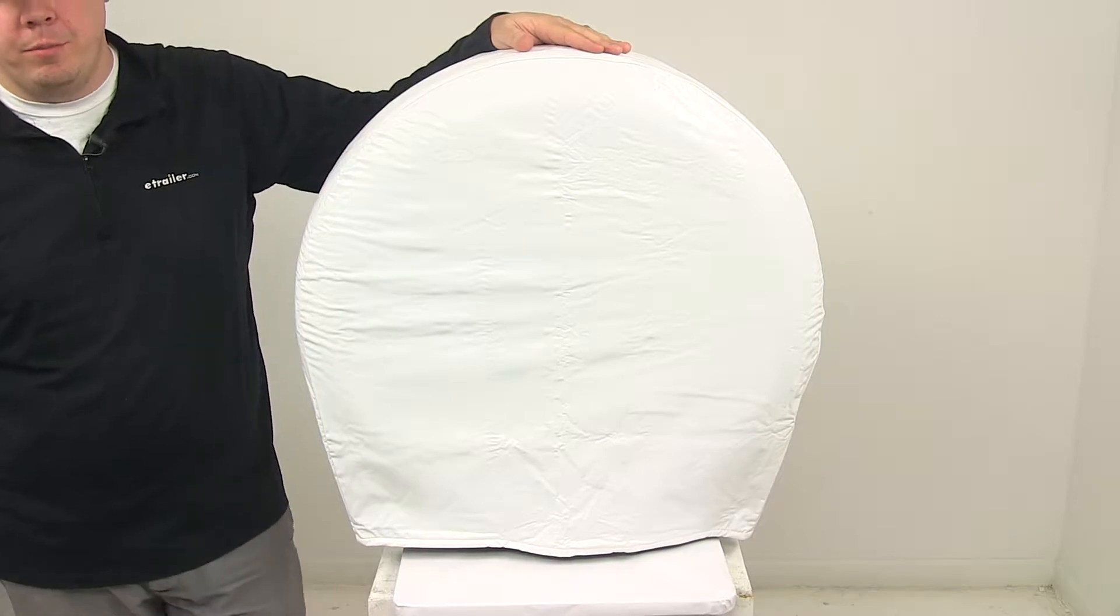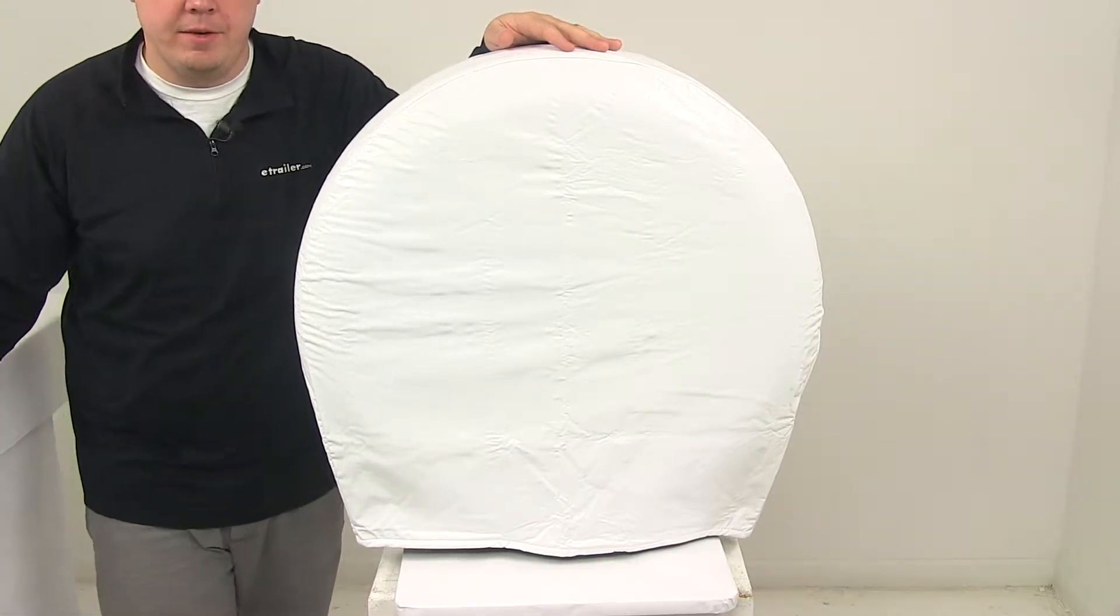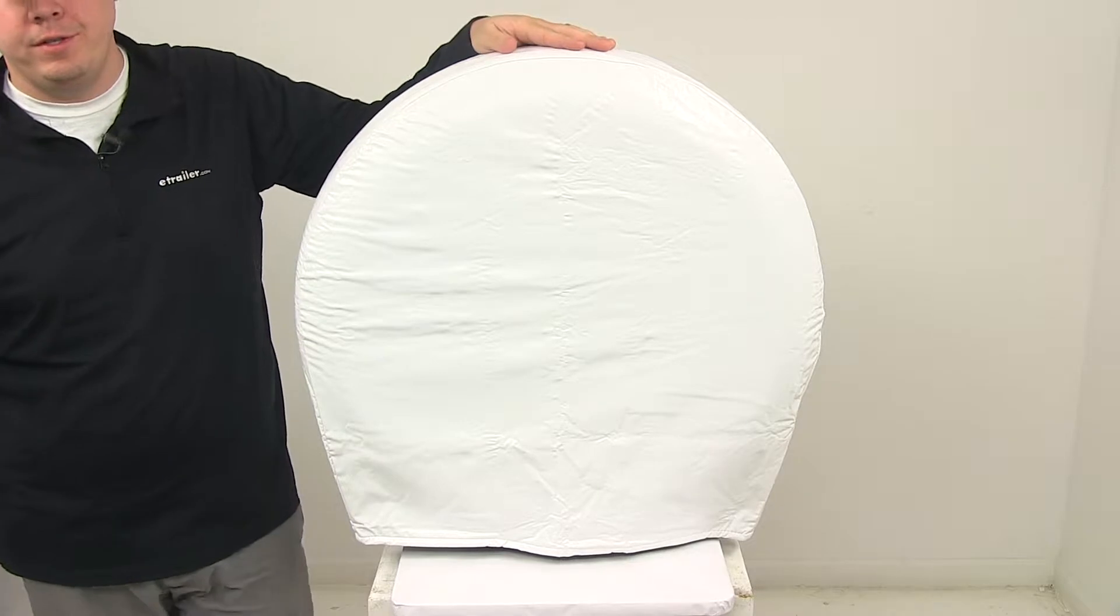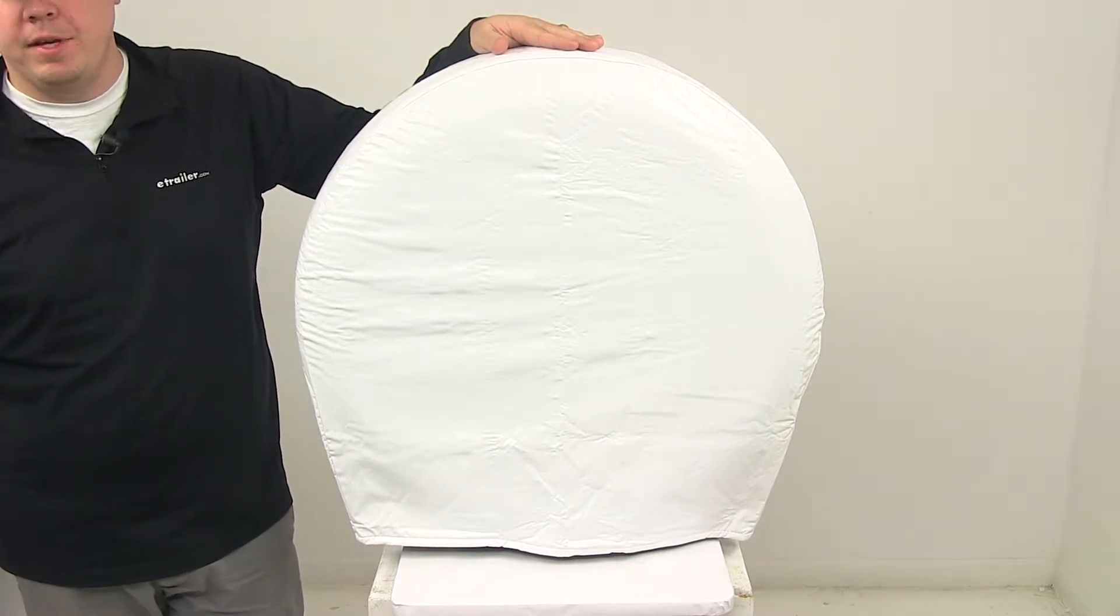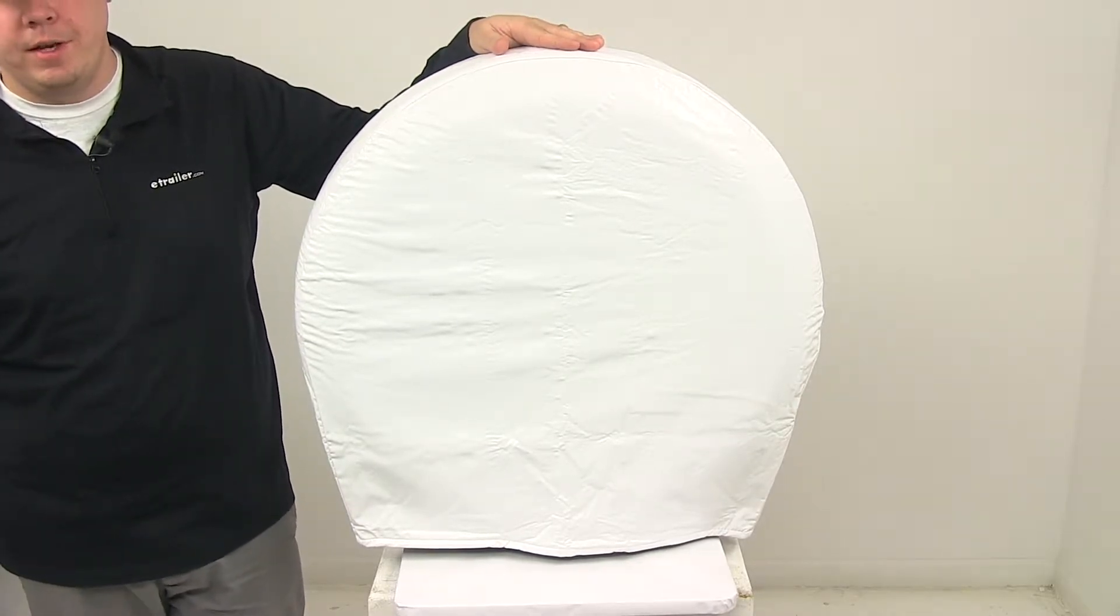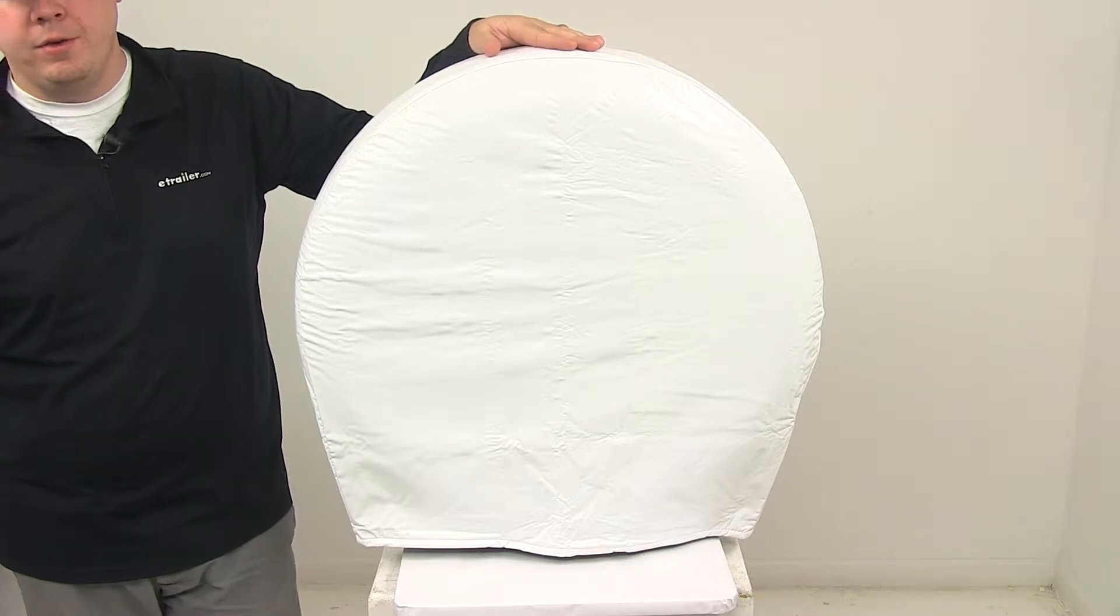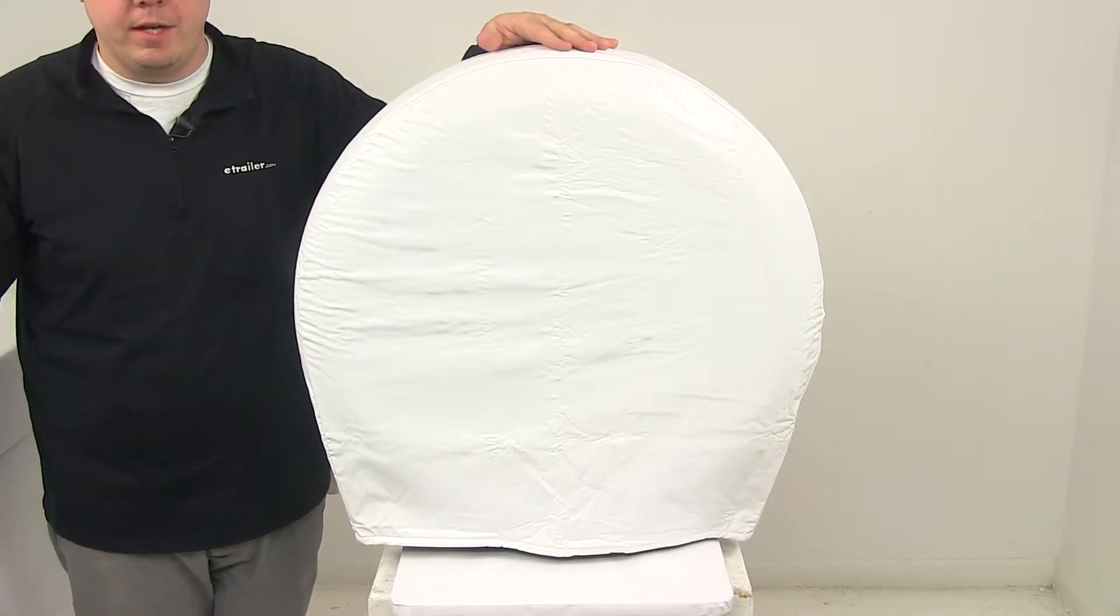These covers are polar white in color and designed for tires that have an outer diameter of 30 to 32 inches. They repel liquid and save tires from damaging UV rays and other environmental hazards. They also help eliminate premature cracking of the tire side walls.